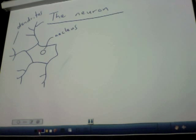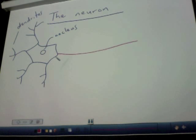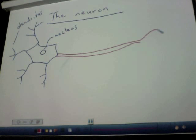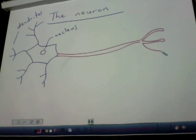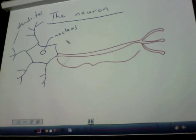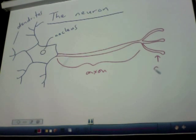Then there's the long process coming from most neurons — this is a particular neuron called a motor neuron being drawn here, a typical motor neuron. This long little tail is called an axon. And then this here is called the axon ending.